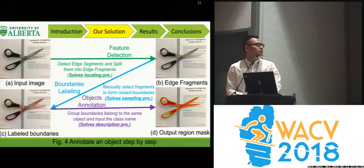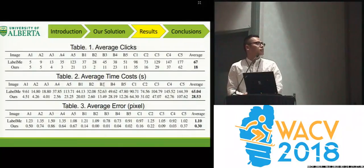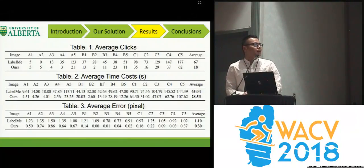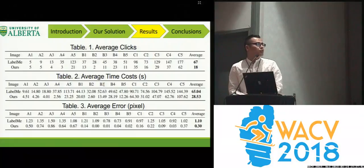We got the results as shown in figure D. We asked 10 volunteers to annotate 15 images using our tool and using LabelMe, measuring average clicks, average time costs, and average error. As seen in the last column of Table 1, our tool reduced average clicks greatly from 67 to 18, and reduced time costs from 65 seconds per image to 28 seconds per image. By using edge detection instead of clicking control points, we removed uncertainty caused by human workers, reducing error from 1.1 pixels to 0.3 pixels.